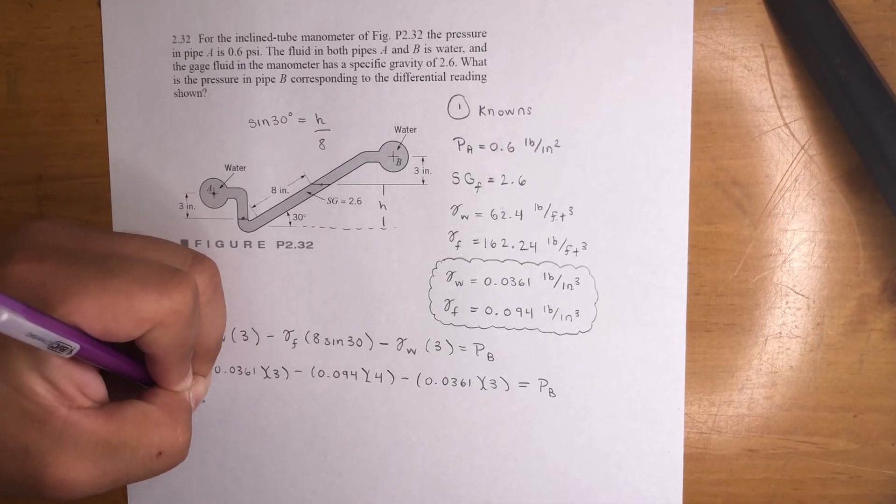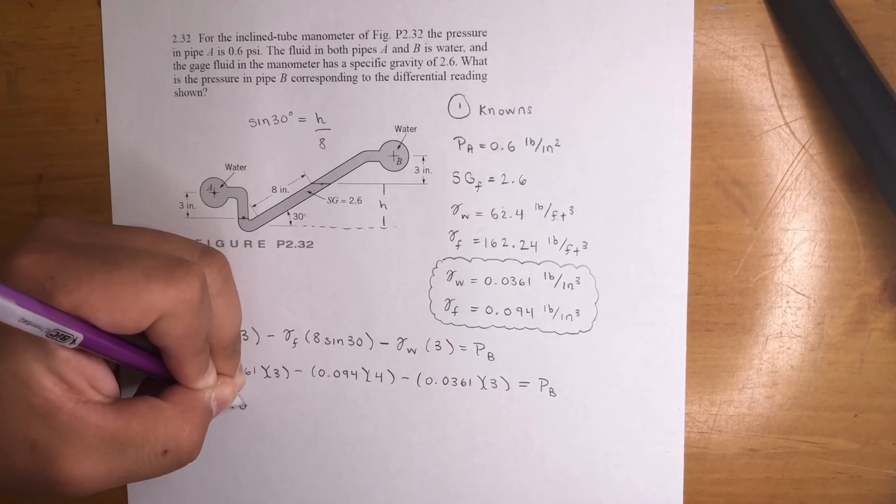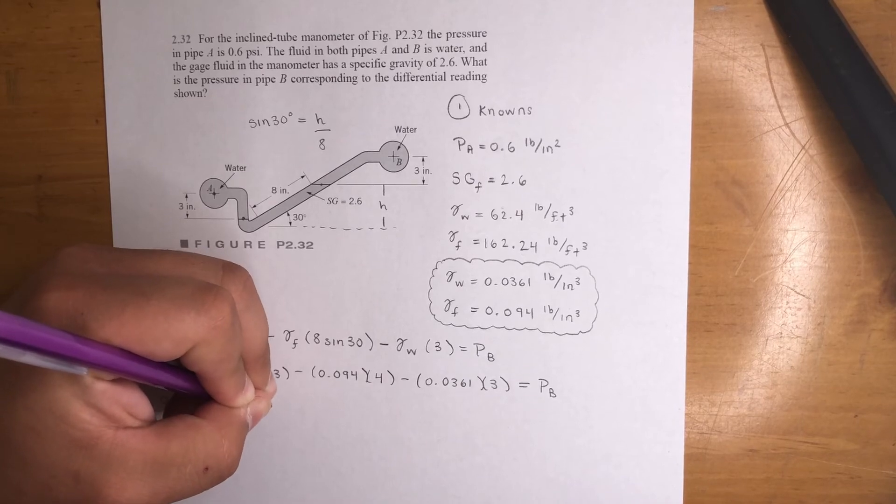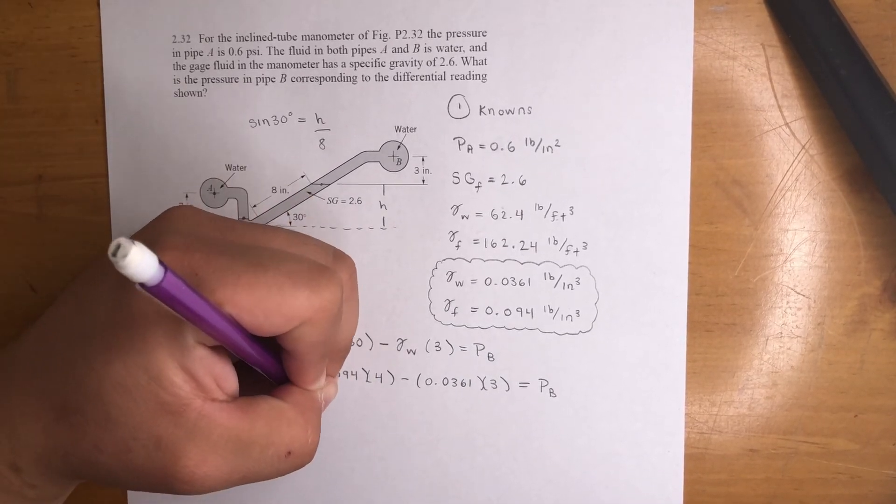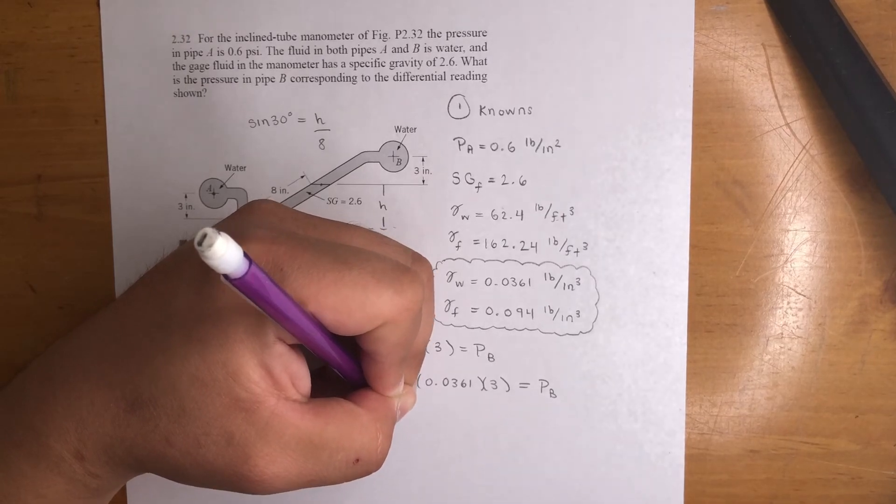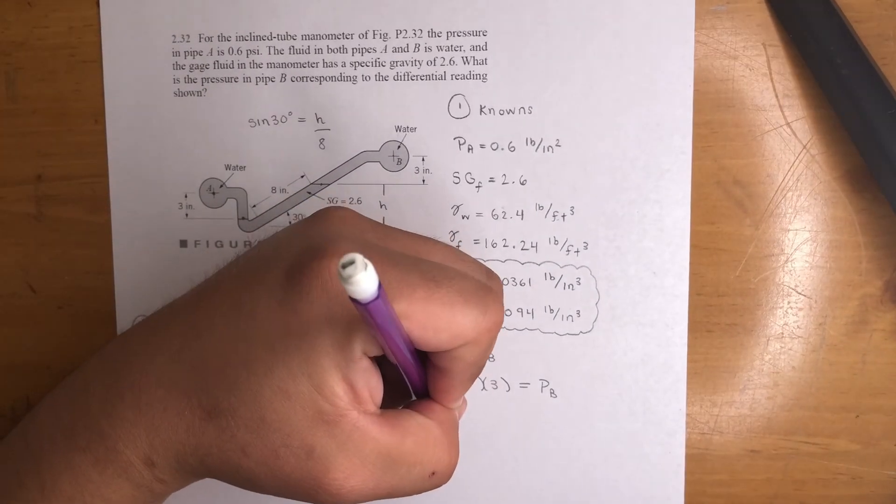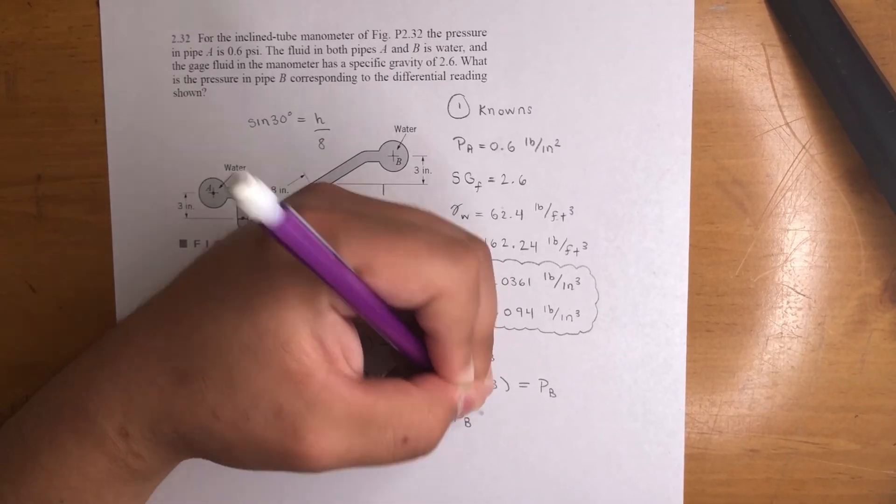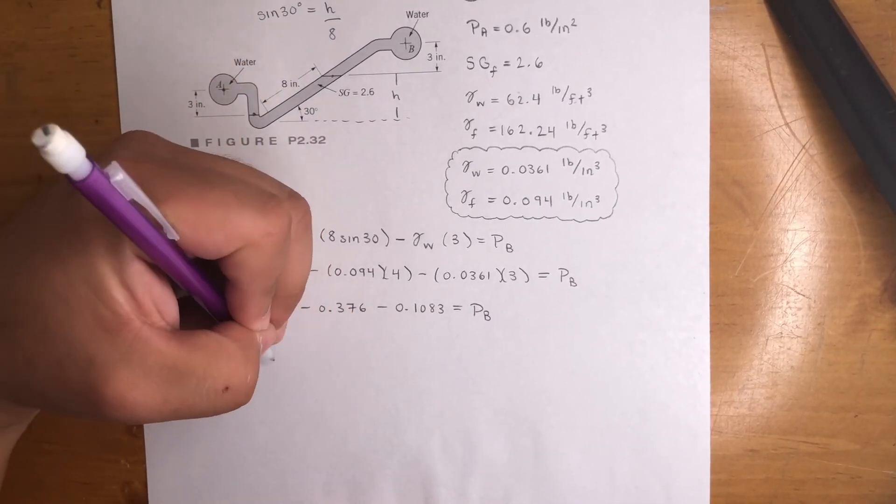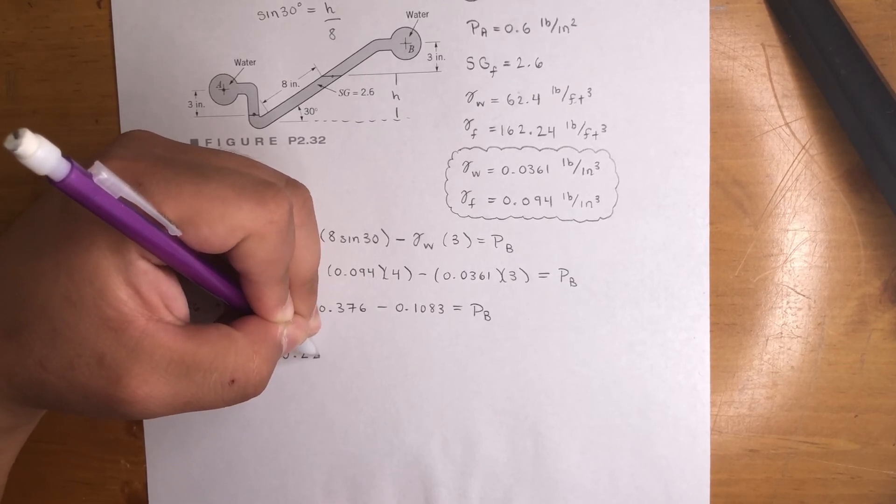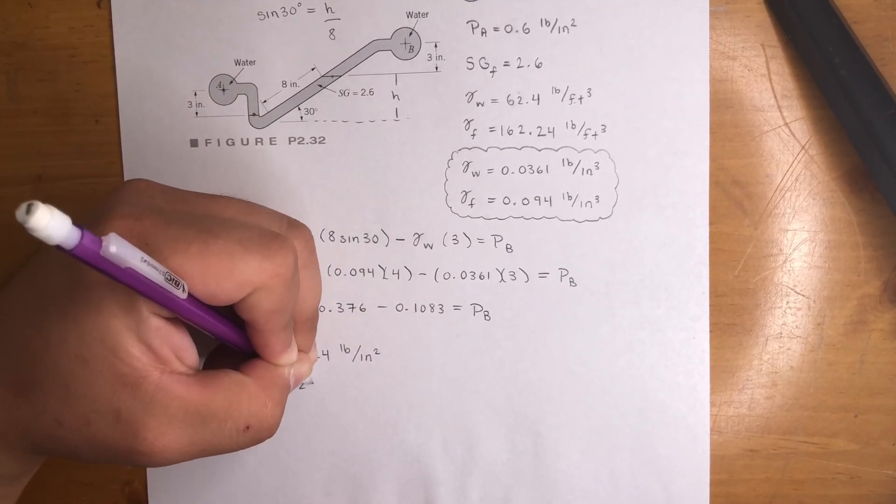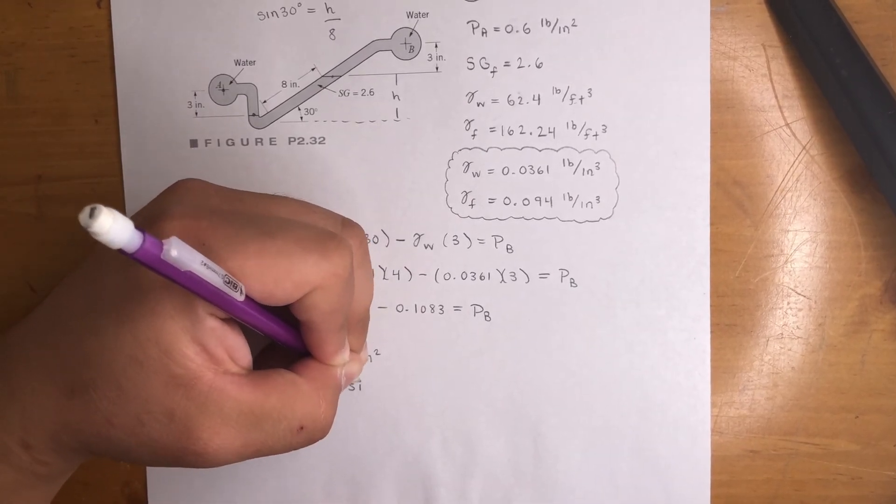0.6 plus that's going to give you 0.1083 minus 0.376 minus 0.1083. Same thing, so they cancelled out actually. I didn't catch that at first. Equals PB. Do the math, you get PB. Move it up in case you can't see it. PB is equal to 0.224 pound per inch squared, or 0.224 psi. So yeah, that's how you do this problem.